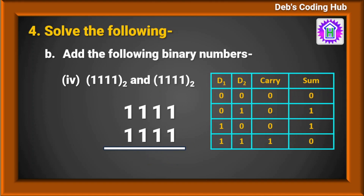The fourth question: add 1111 with 1111. Starting from the right: 1 plus 1 is 10, so 0 is sum and 1 is carried. Then 1 plus 1 plus 1 is 3, which is 11 in binary, so 1 is the digit and 1 is carry. Again 1 plus 1 plus 1 is 3 giving 11 in binary, so 1 here and 1 is carry. Once more 3 ones give 11. So this is the final number.